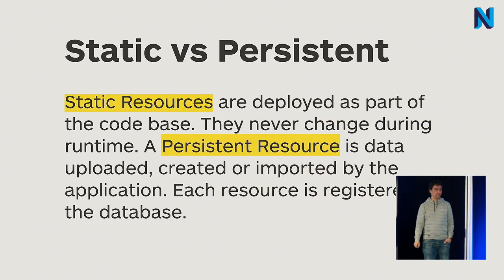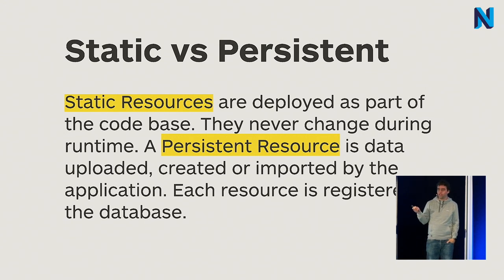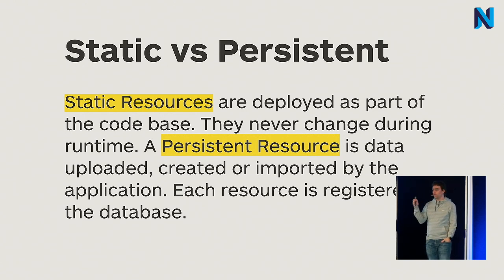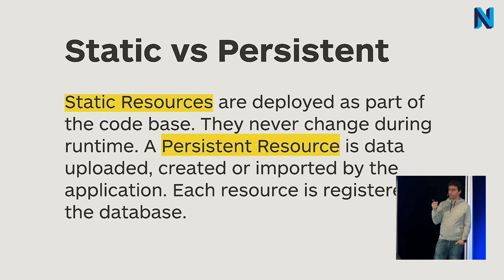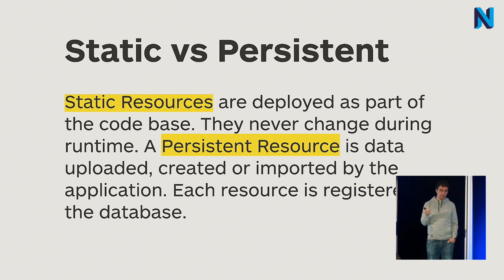We have static and persistent resources. Static resources never change — they are static in your file system or in the code you deploy. These are resources in Git: your CSS files, images, company logo. Persistent resources are stored in the database or file system. Static resources are in Git; persistent resources are in the database or file system.